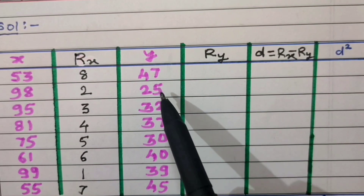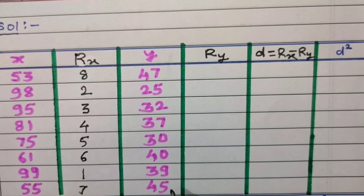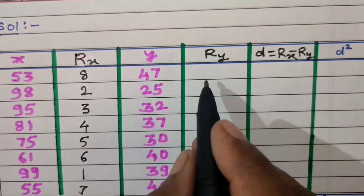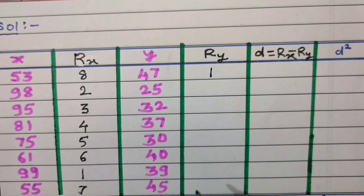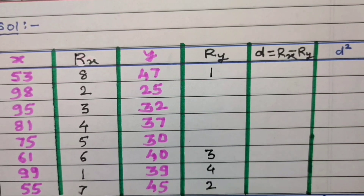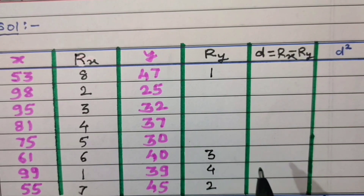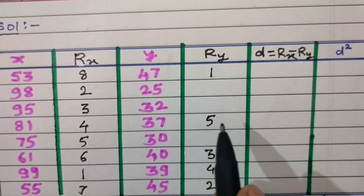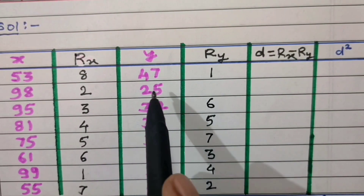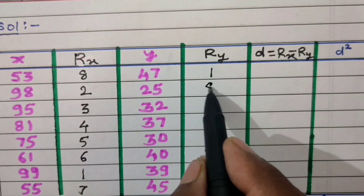For variable y, the largest number is 47, so rank 1. Then 45 gets rank 2, 40 gets rank 3, 39 gets rank 4, 37 gets rank 5, 32 gets rank 6, 30 gets rank 7, and 25 gets rank 8. No value of variable y is repeated.